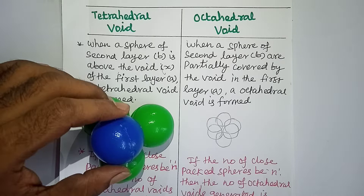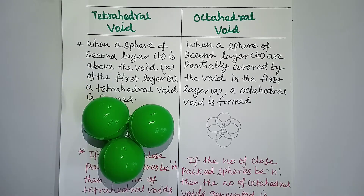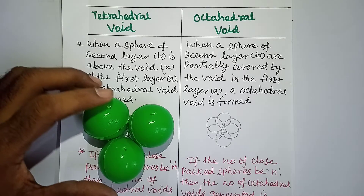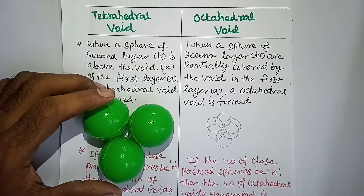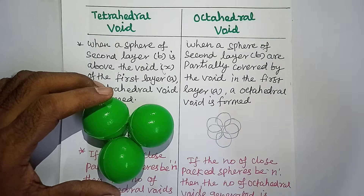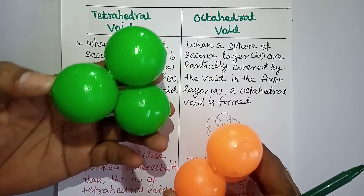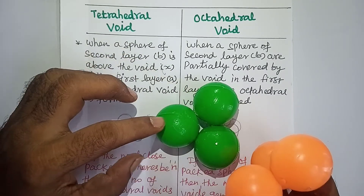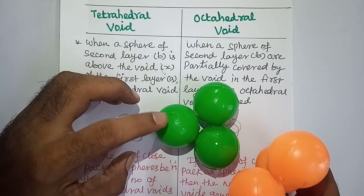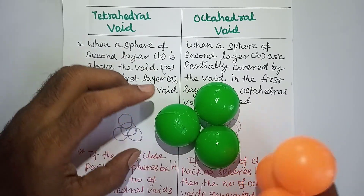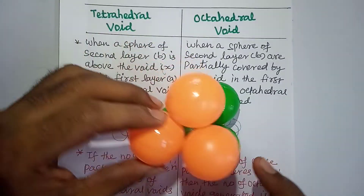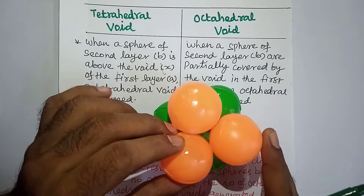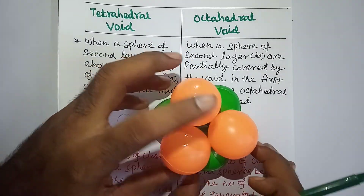Octahedral voids means the free or vacant space present between six atoms. Between six atoms is called an octahedral void. Here we can see three atoms in the lower layer — this is layer A. We place the second layer in the depression between the first layers.